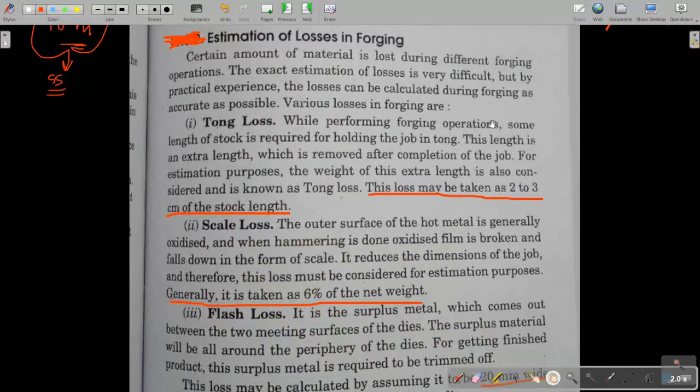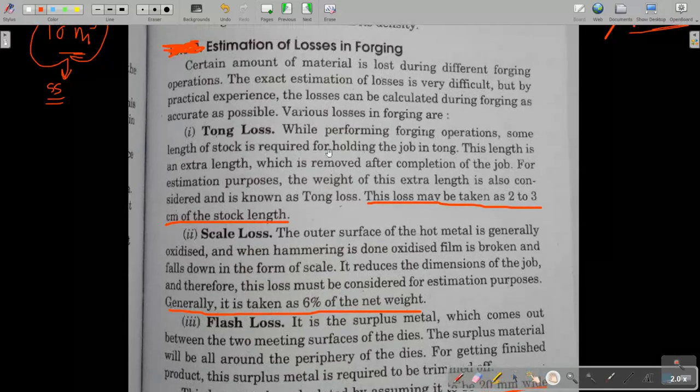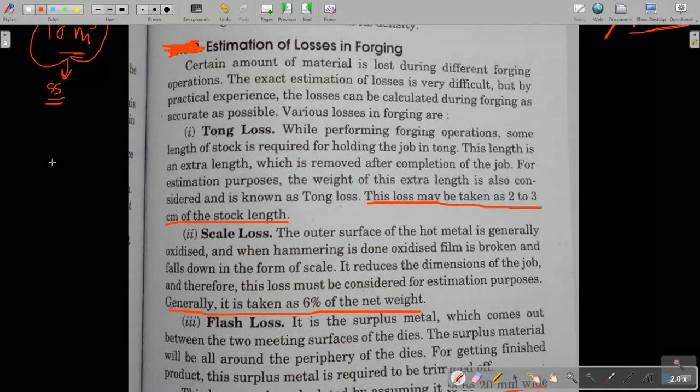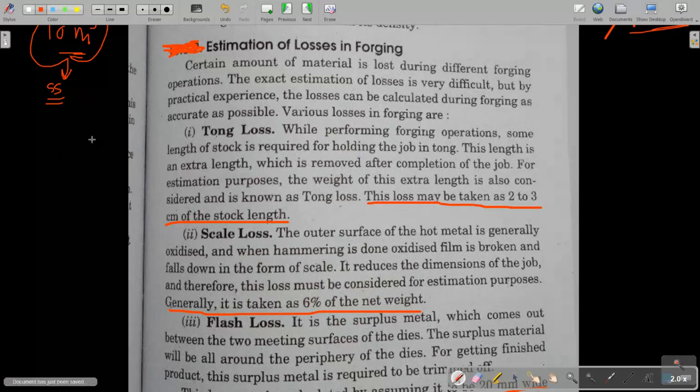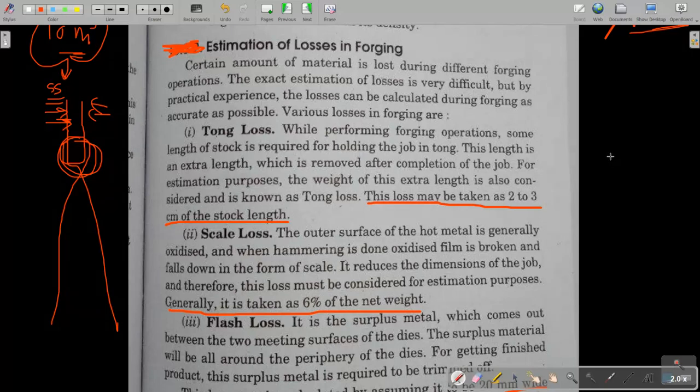First is tong losses. You might have seen in YouTube videos and in practical also that these kinds of tongs are there, very long tongs, and here some workpieces held very red hot above recrystallization temperature. And here the workpiece is hammering like this. So this much part is not getting forged. So this we have to take additionally for holding, so that is also loss for us. Generally it is taken as 2 to 3 centimeter of stroke length.